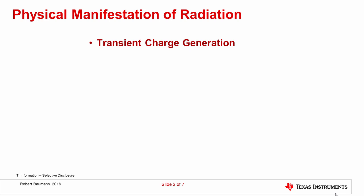In other words, the radiation passes through the semiconductor, excess charge is generated, and then a lot of this charge recombines, and some of it may be collected by junctions and nodes that are at different potentials.